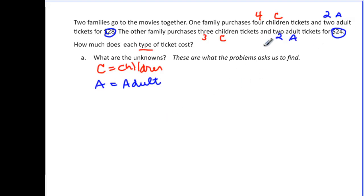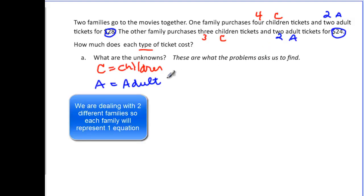So we're going to take each family since that's the two different things that we're dealing with. We're going to take each family and let them represent one equation by themselves. So 4C, I'm going to do the first one in all red, plus 2A, which is our adult, and that was equal to $28. And then the other family was three children plus two adults, and that was only $24.